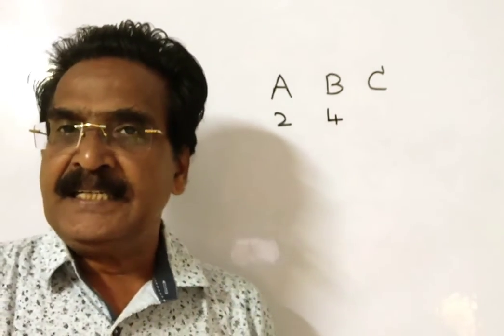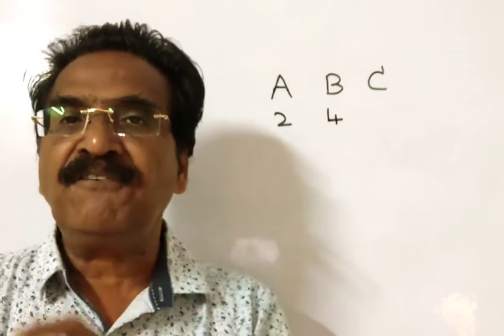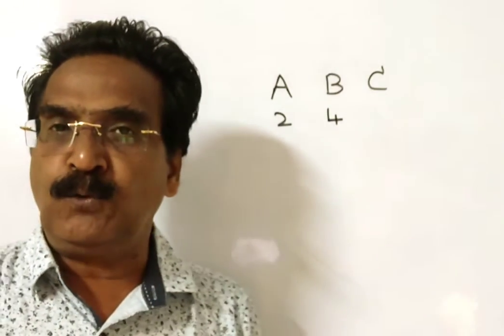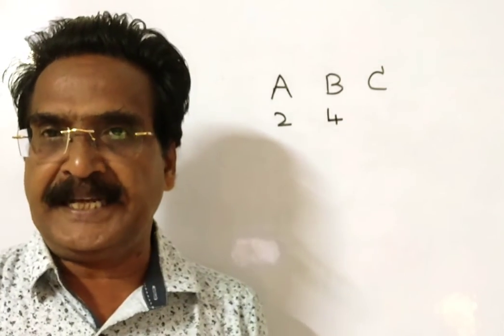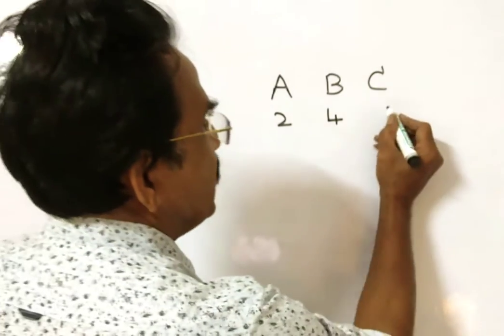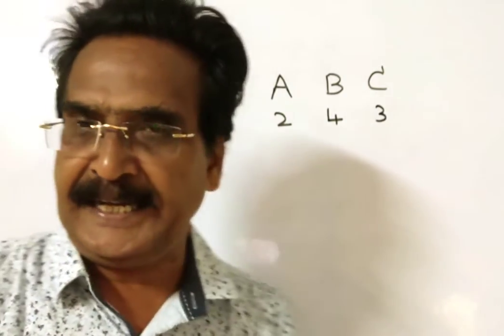It is given C does half of the work done by A and B together. Friends, A and B together can do 6 units of work per day. So C can do half of 6, so C can do 3 units of work per day.